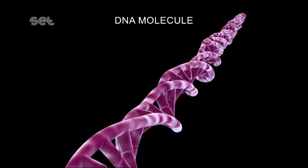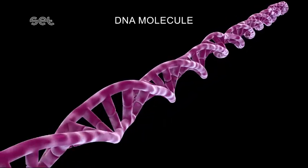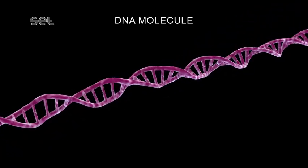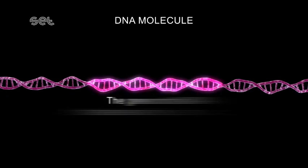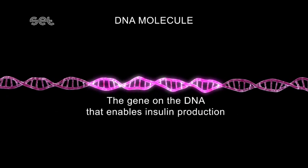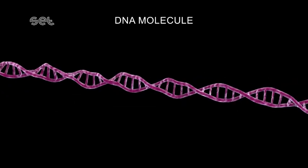The location of the gene on DNA that enables insulin production is determined. This area is then cut and separated from the DNA.